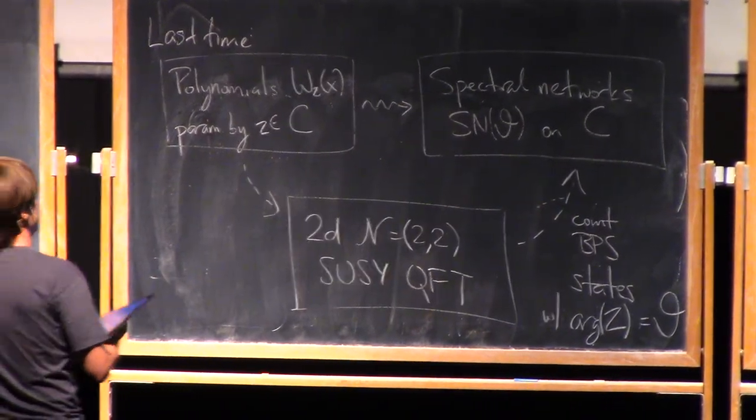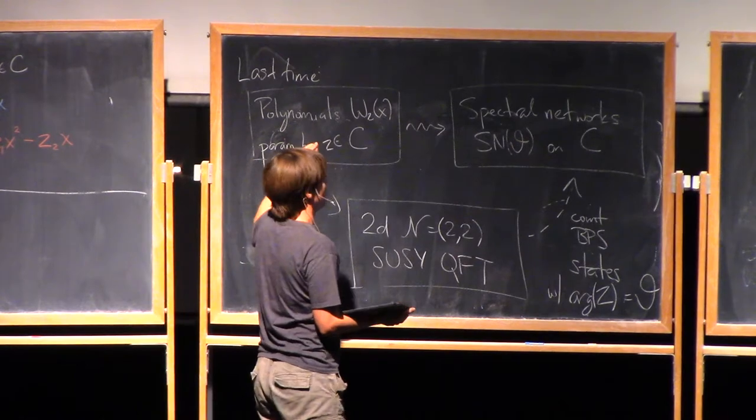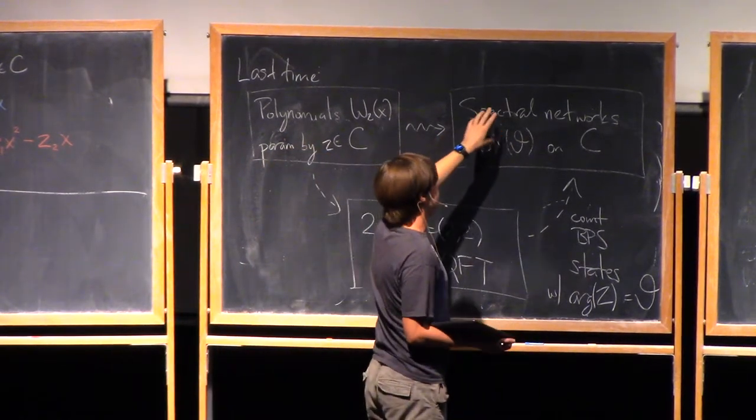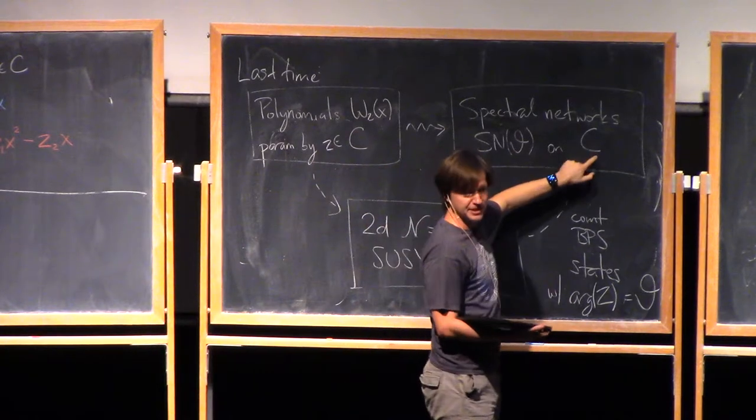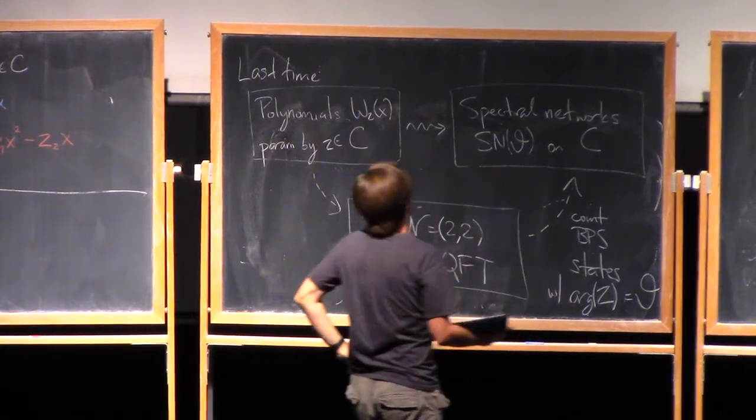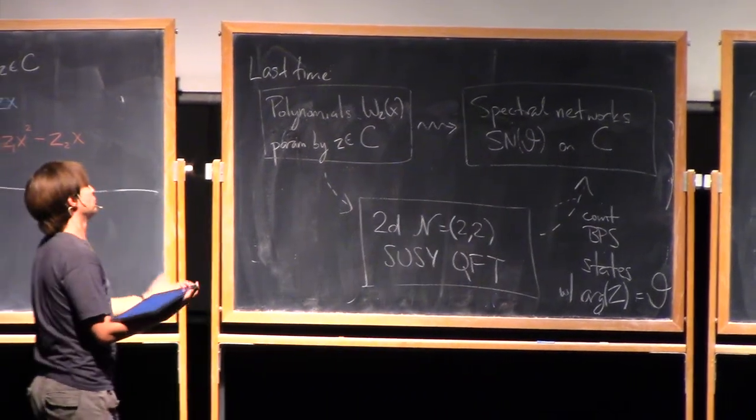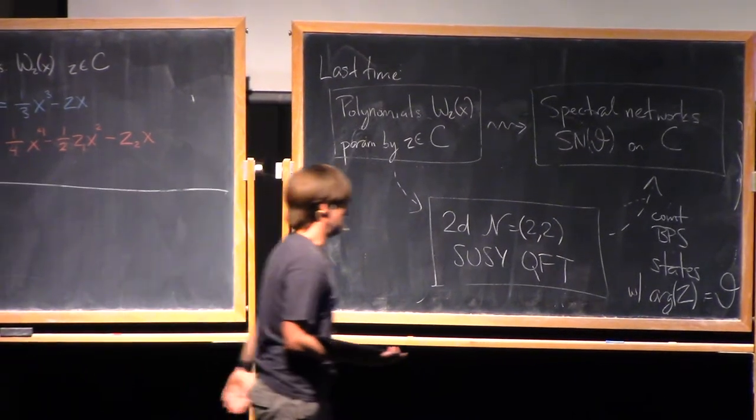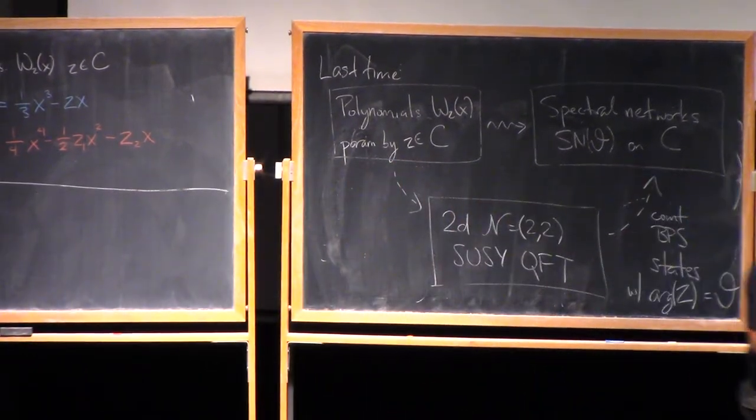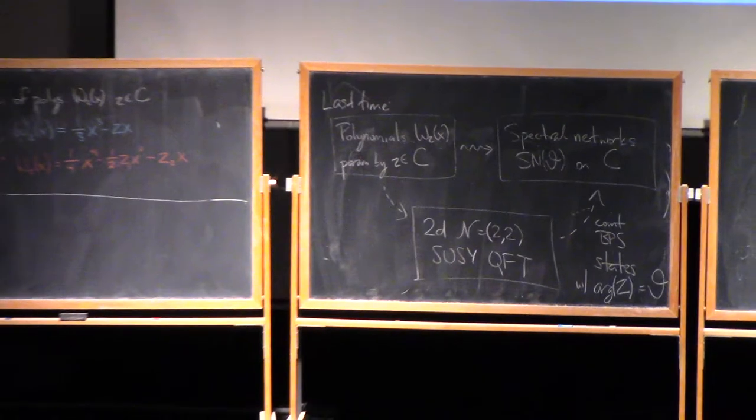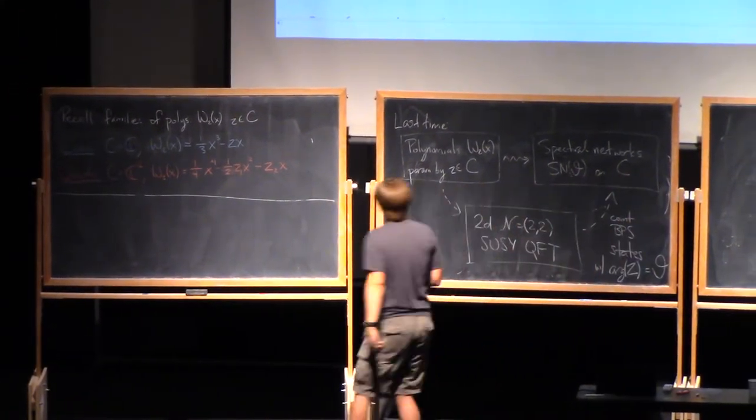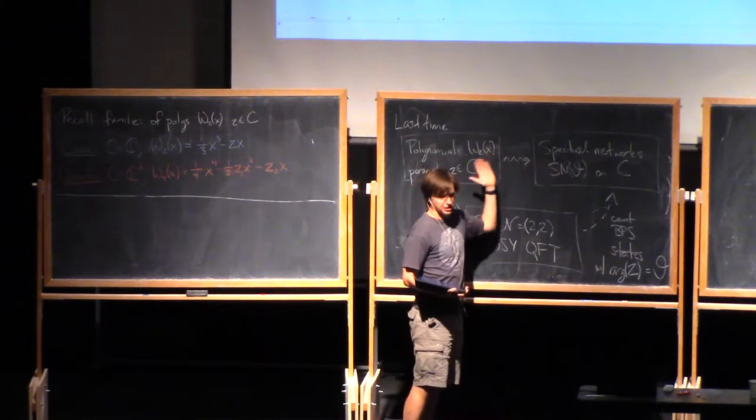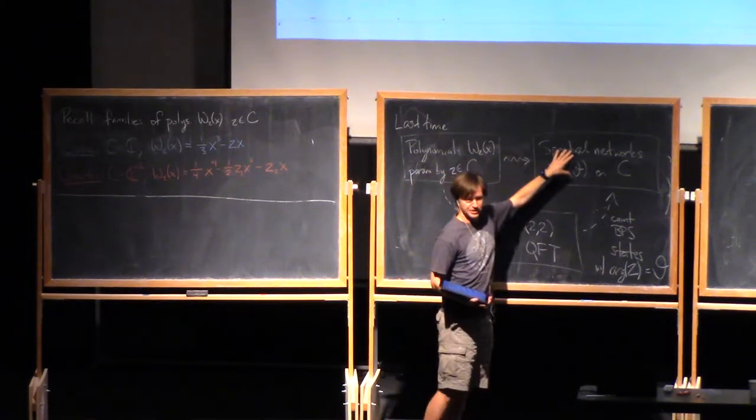We had this family of polynomials, and from that we produced, ultimately, some concrete gadget called a spectral network drawn on the parameter space C. It's a kind of network of co-dimension 1 curves, co-dimension 1 general walls on C, depending on the choice of a phase which we called theta. And in the end what I gave you was just a concrete construction that just starts with a polynomial and produces this thing.